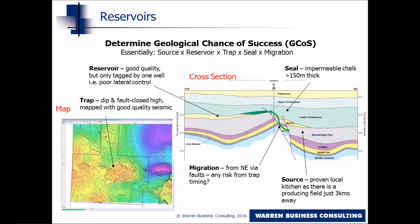The quality of the source rock; the porosity and permeability of the reservoir rock; the presence of a trap; the closure and sealing of the trap with a seal rock; and the migration and timing of the movement of oil and gas from the source rock to the reservoir rock.